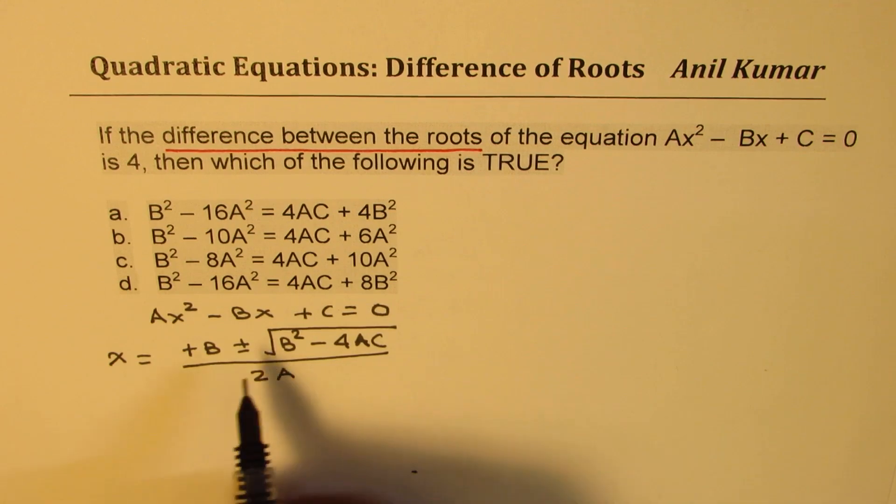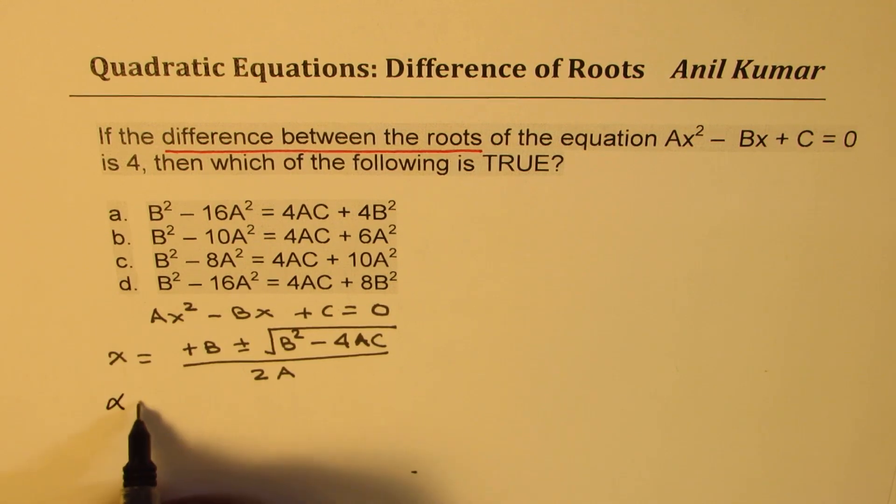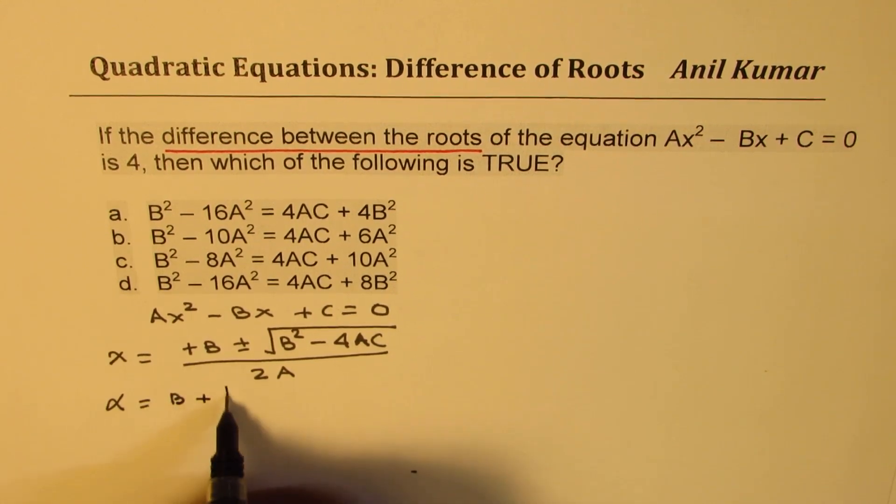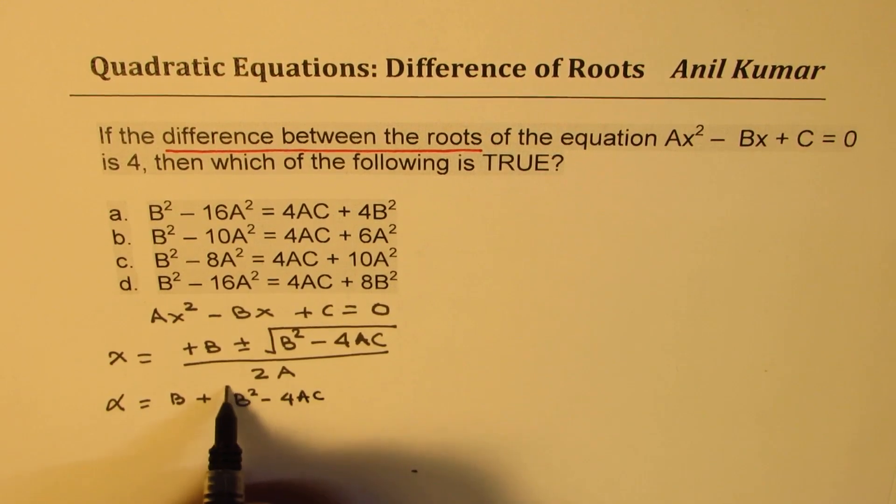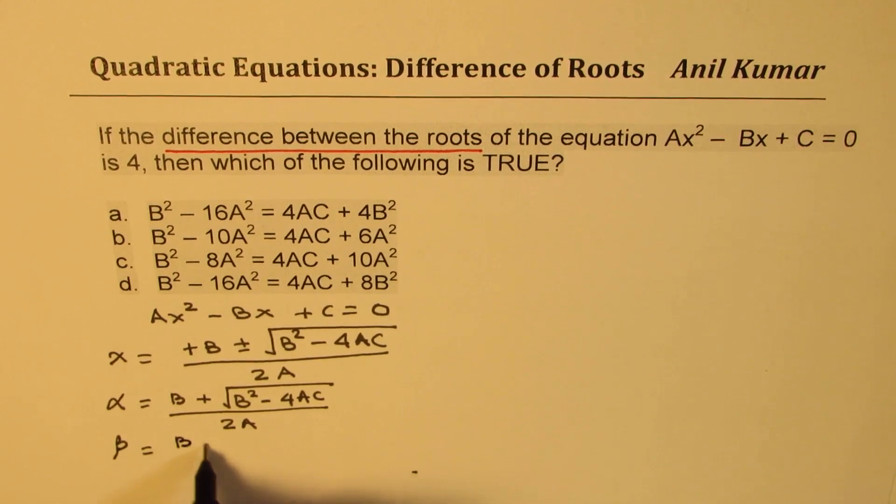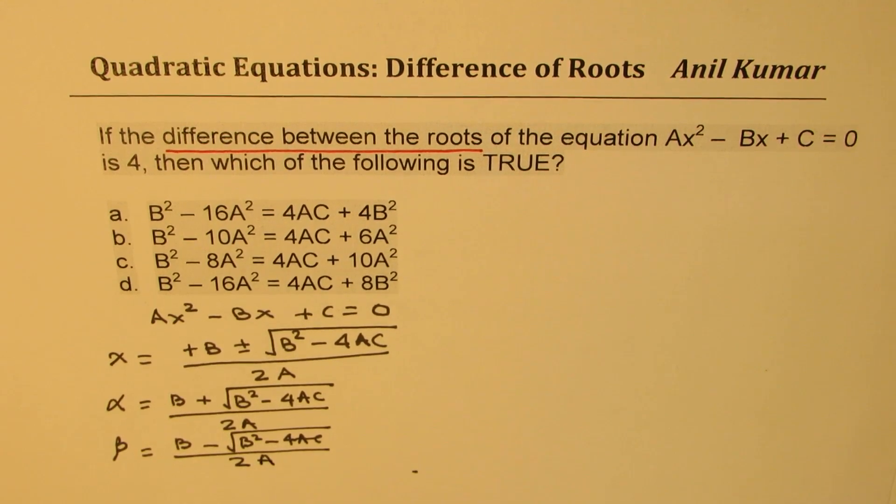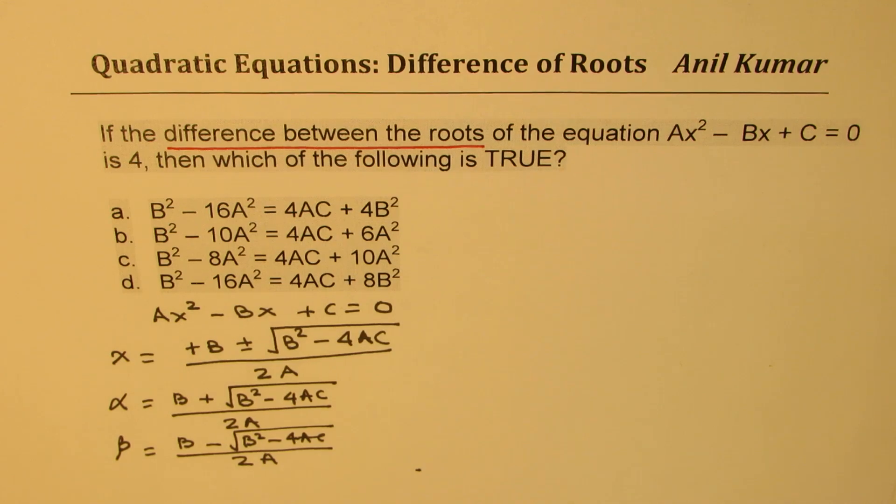That means we have two roots here. One root, let's say α, is b + √(b² - 4ac) over 2a. The other root, β, is b - √(b² - 4ac) over 2a. These are your two roots whenever you're working with a quadratic equation.